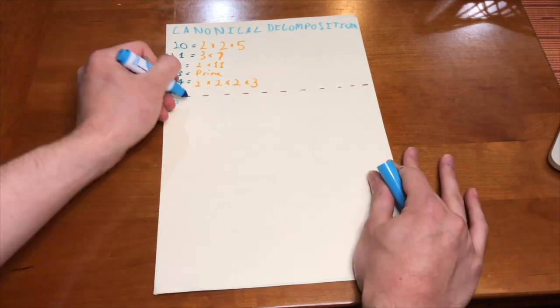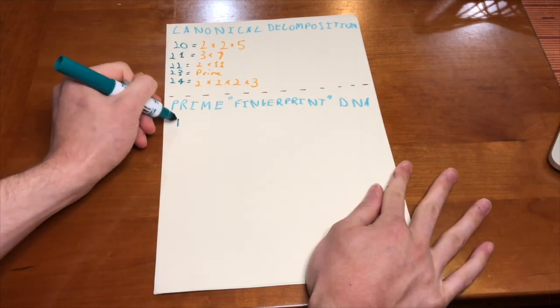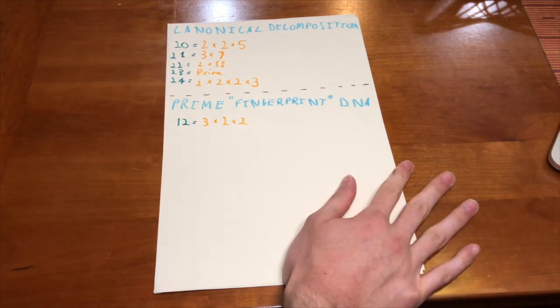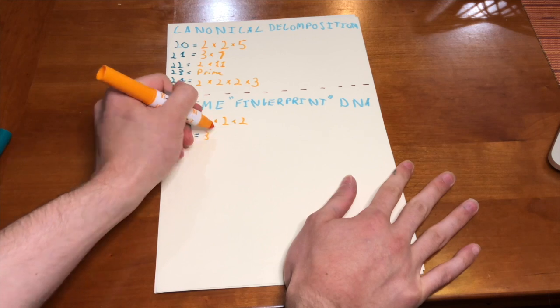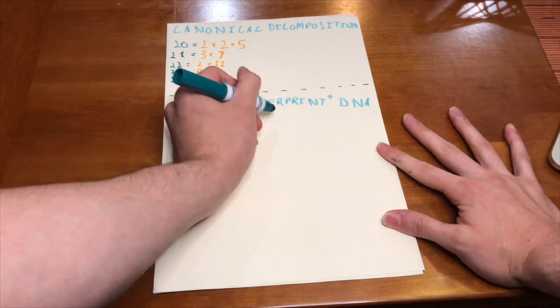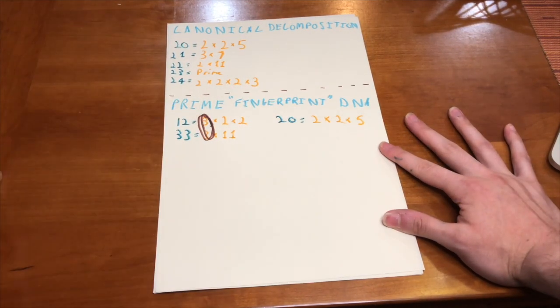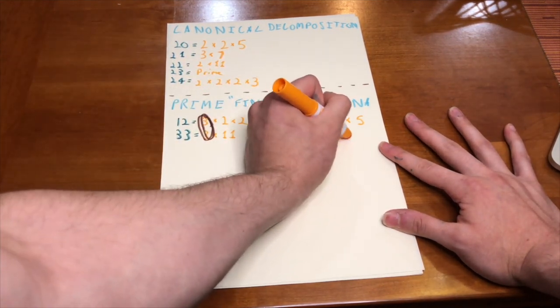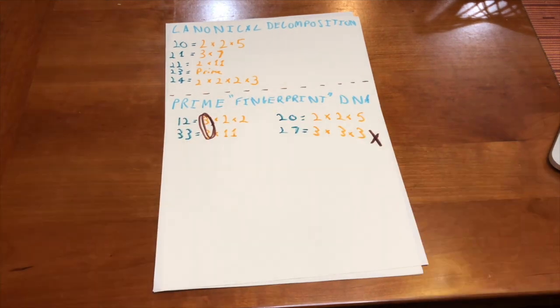While no two numbers have the same prime fingerprint, they can often share DNA. Take 12 and 33, for example. 12 is 3 times 2 times 2, while 33 is 3 times 11. They share a 3 in their DNA, if that makes sense. It's also possible to take a pair of numbers that don't share any DNA. 20 and 27, for example, don't share any prime factors in their prime fingerprints, so to speak. When two numbers don't share any DNA, we say that they are relatively prime.